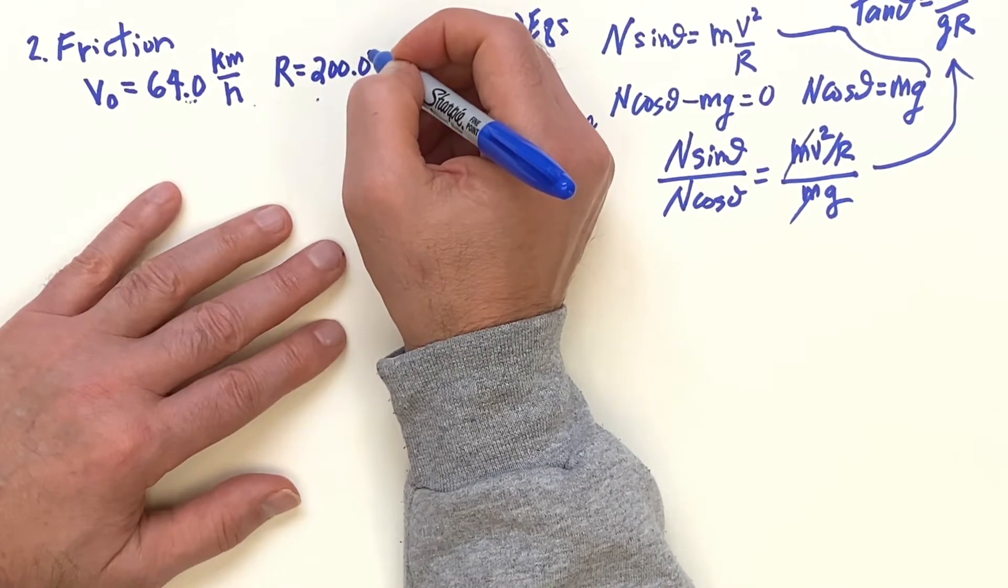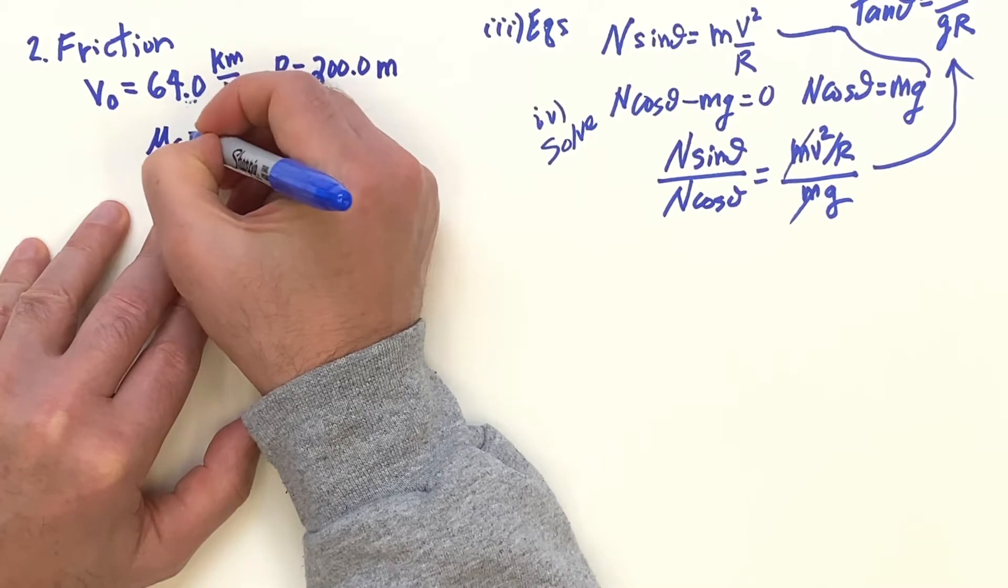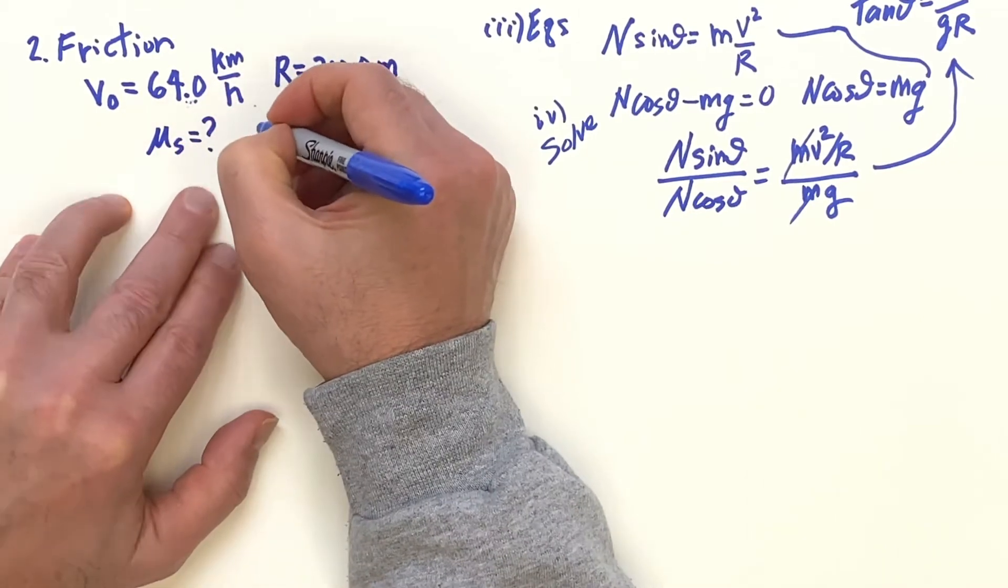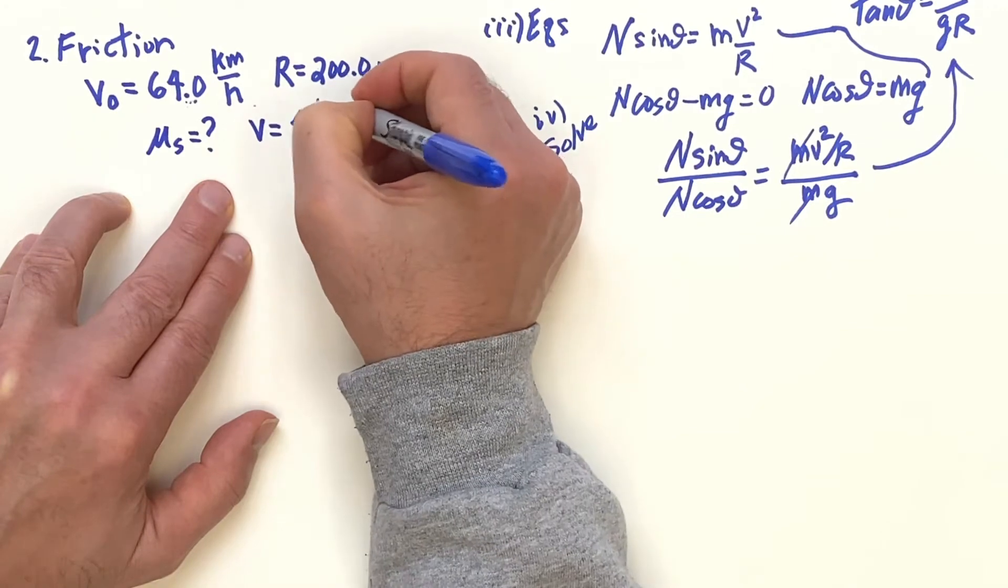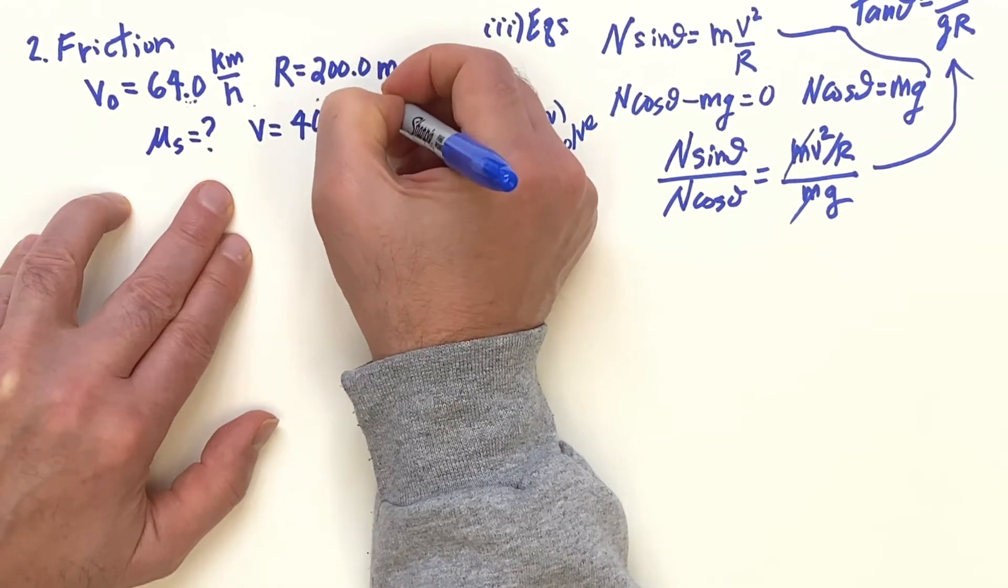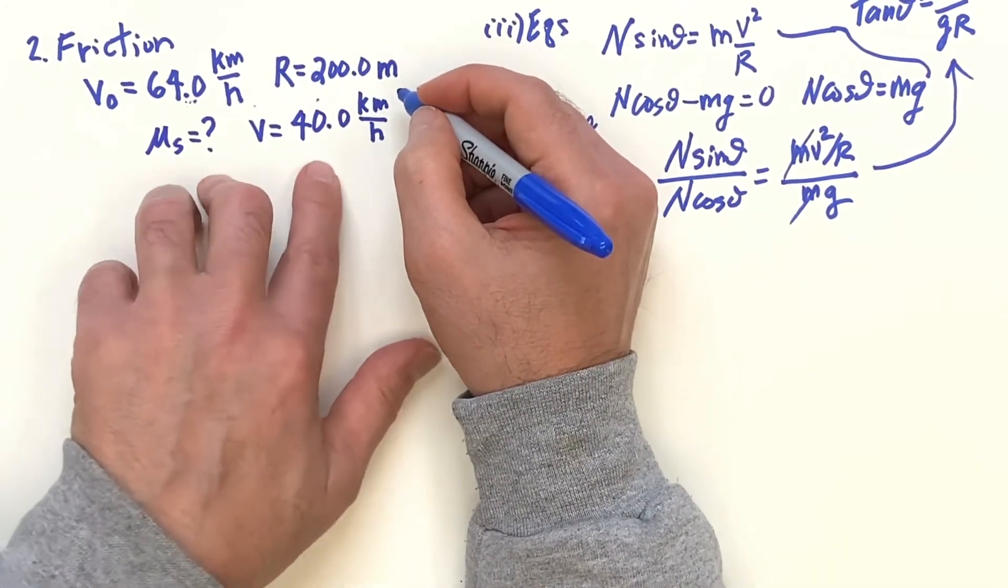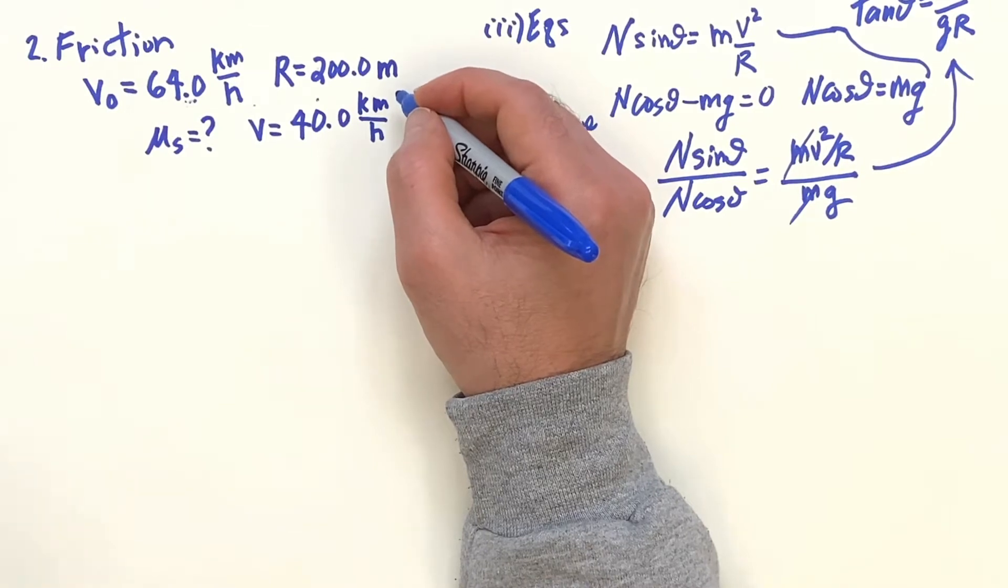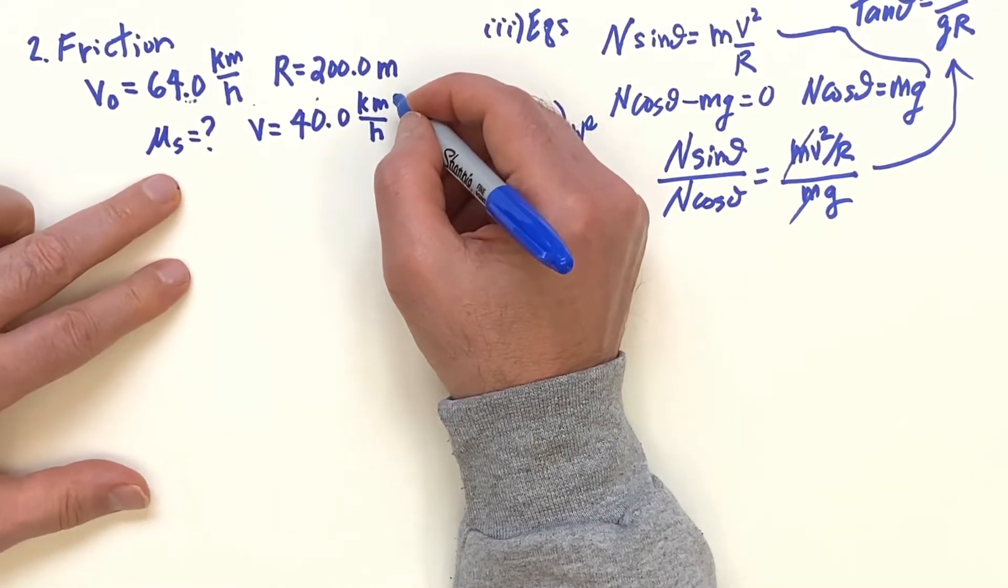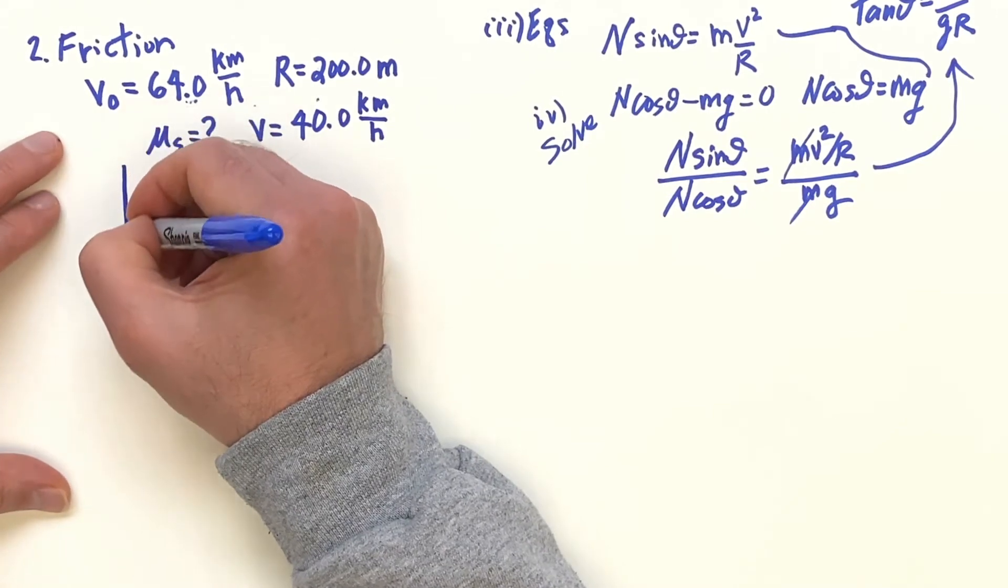Now on a rainy day, then you're going to need some minimum mu s. So the question is, what is the minimum mu s needed if we're going slower at 40? Because if we go slower, 40 kilometers an hour, it's 25 miles per hour. What is the minimum mu s needed? So let's go ahead and sketch this force diagram.